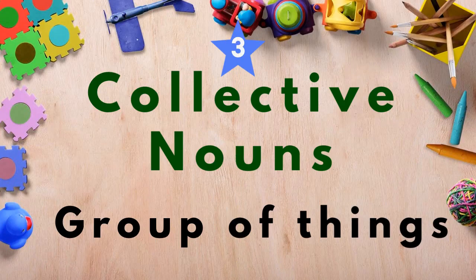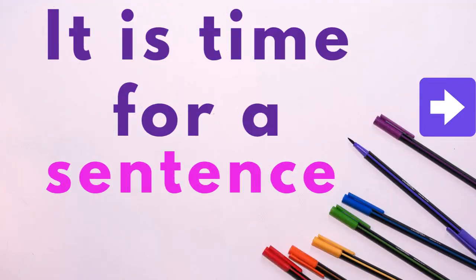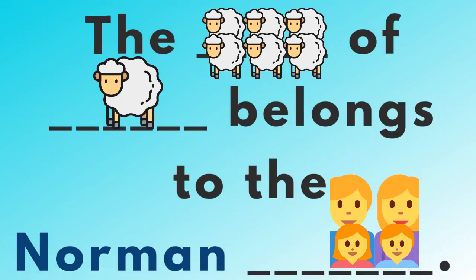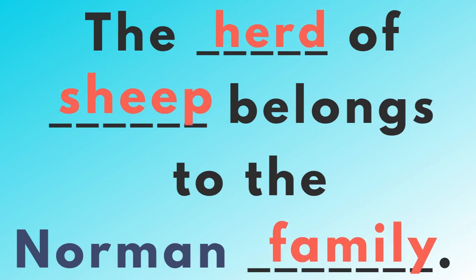Number three is collective nouns — a group of things. Here are some examples: family, herd, team. The herd of sheep belongs to the Norman family.